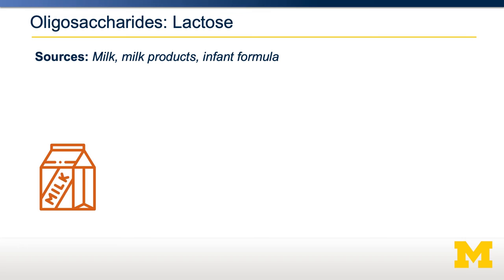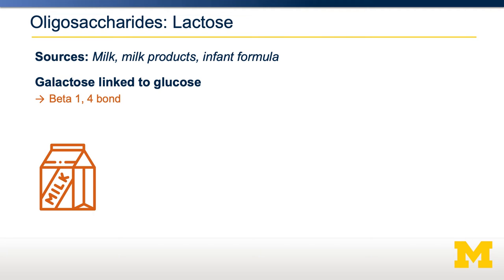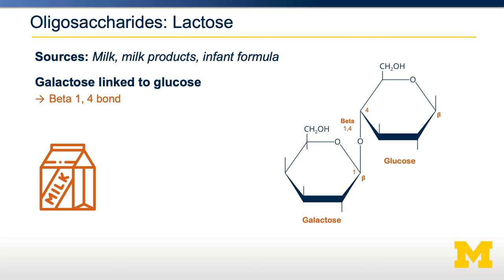Lactose is found in milk, milk products, and infant formula. It comprises a glucose subunit connected to a galactose subunit with a beta-1,4 bond. The anomeric carbon of galactose is in beta orientation—beta, balloon, up—meaning the hydroxyl group on carbon 1 of galactose points up. It is connected to carbon 4 of glucose, making it a beta-1,4 linkage between galactose and glucose.